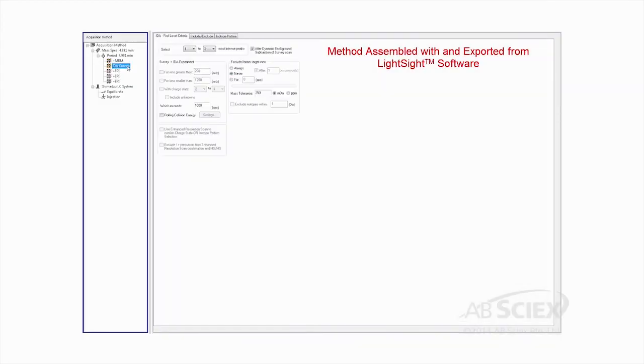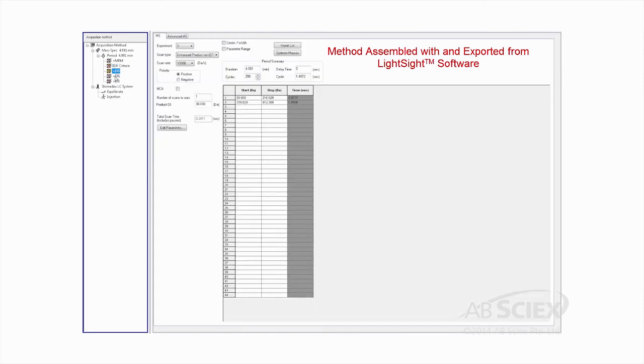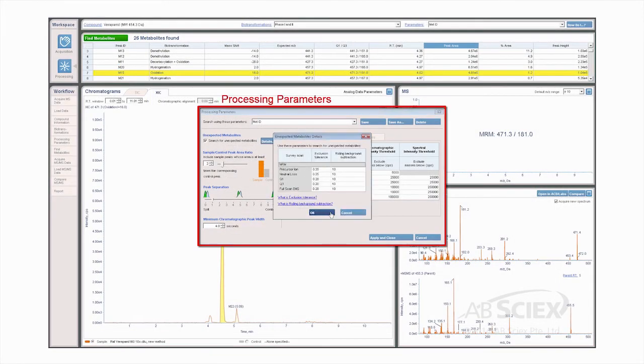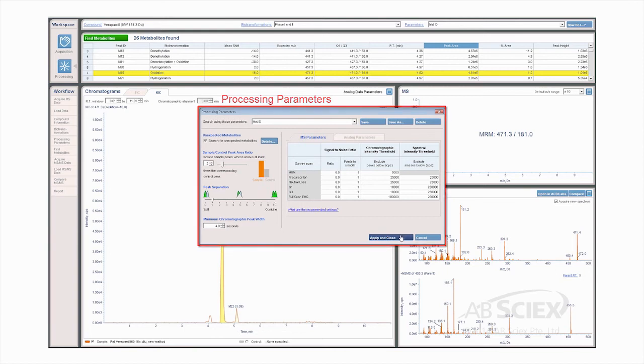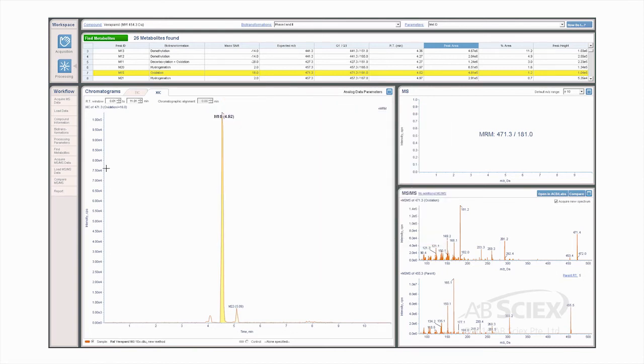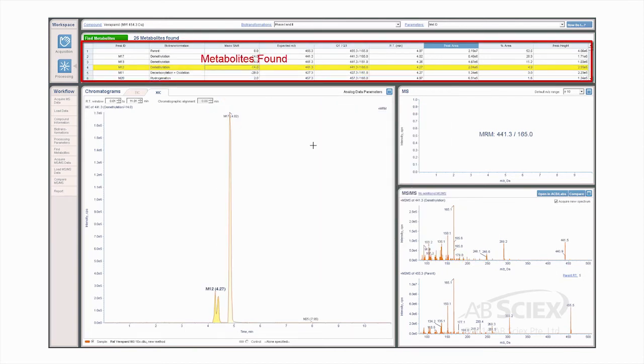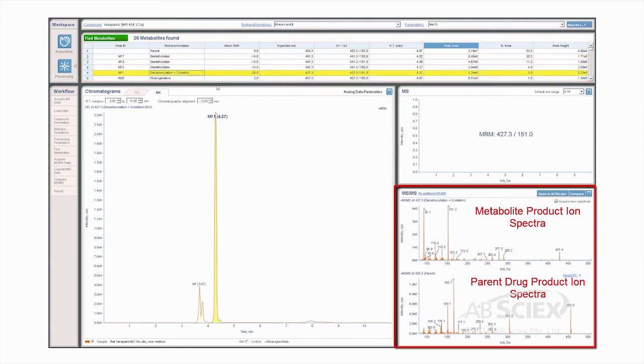LightSight software integrates automated method building and intuitive data processing and review. In addition to superior LC-MS/MS peak finding, LightSight provides the ability to analyze UV or radiochemical chromatograms in parallel. No matter what your level of expertise, LightSight effectively streamlines the entire met ID process from data acquisition through analysis and to reporting results.